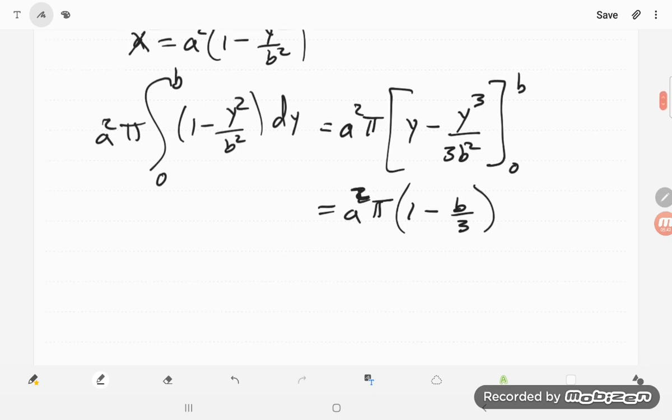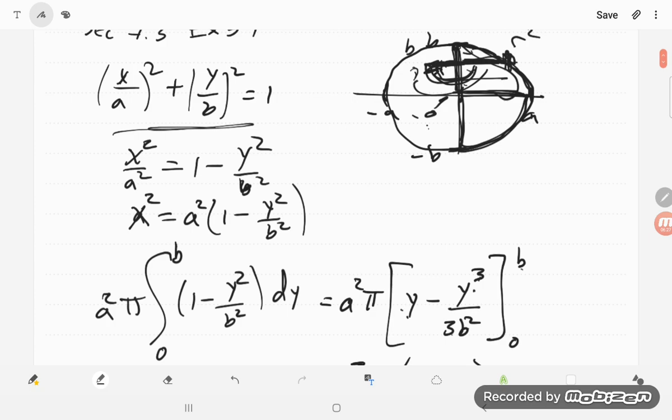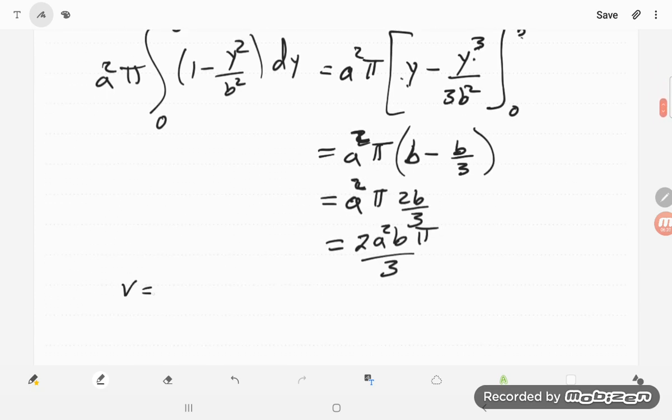I need b when I put that in there, minus b. Here I have b cubed over b squared, so that's b over 3. And so I get a squared pi, and then 2b over 3. So total, I get 2a squared b pi over 3. But remember, I had to double this thing because I just did the top half. And so that volume is 2 times 2a squared b pi over 3. And so I get my 4a squared b pi over 3, which is what they wanted.